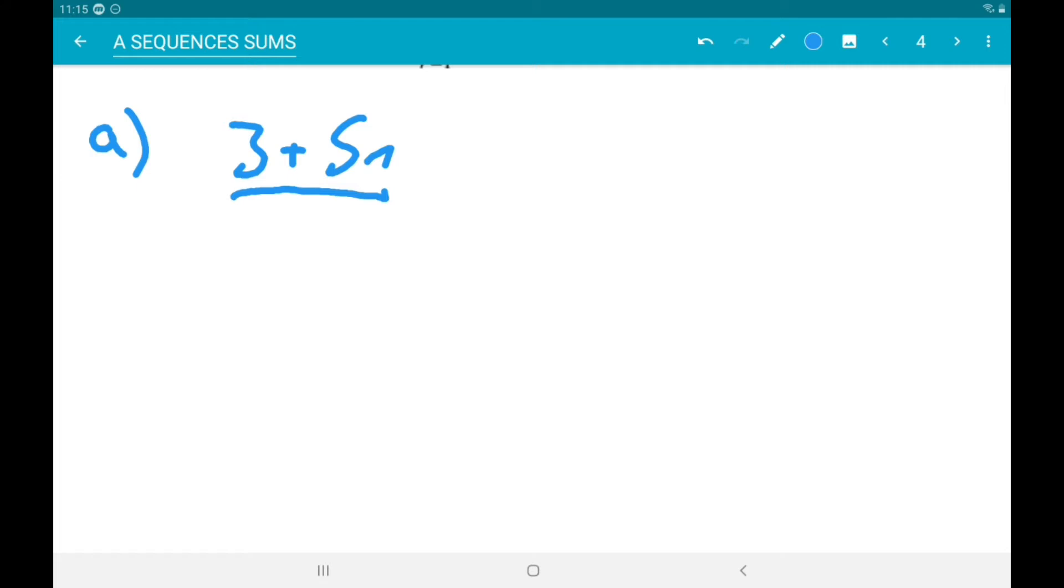Alright, so we need the first term and the last term. So the first term is 3 plus 5, so that's 8. And the last term is when n is 16. So that's going to give us 3 plus 5 times 16, so that's 83.